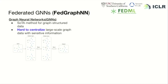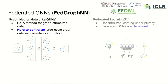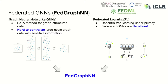Graph neural networks are the first choice for graph-structured data. However, many real-world applications require decentralized data due to privacy concerns. On the other hand, federated learning is a distributed learning paradigm with probable privacy guarantees. Even so, training GNNs in a federated setting is still an open problem.